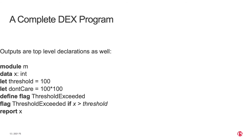Here's a complete DEX program. As you can see, the outputs and inputs are top-level declarations. It's a module M. It has an input X which is an integer. It's going to echo that input to the output with the report at the bottom, and if X is greater than 100 — this variable threshold — then it's also going to report a threshold exceeded to the output.